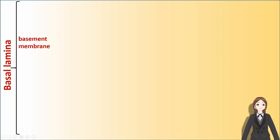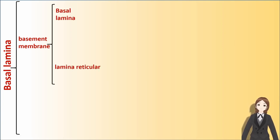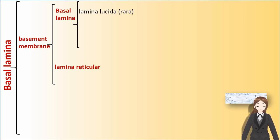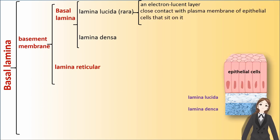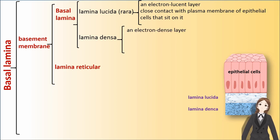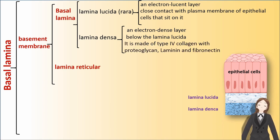The basement membrane has two parts: basal lamina and lamina reticularis. The basal lamina itself has two parts. Lamina lucida (or rara) is an electron-lucent layer in close contact with the plasma membrane of the epithelial cells that sit on it. Lamina densa is an electron-dense layer found below the lamina lucida, and it is made of type 4 collagen with proteoglycan, laminin, and fibronectin.